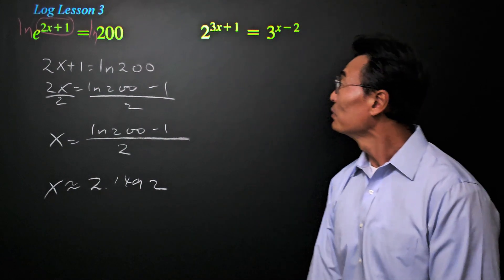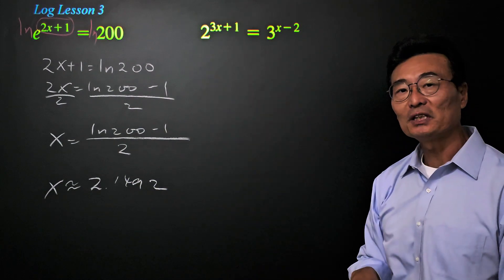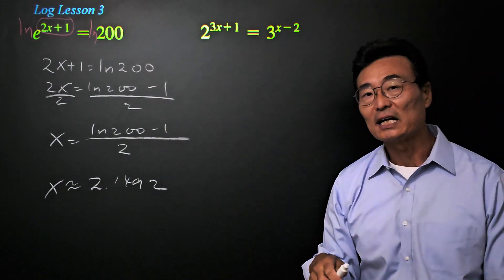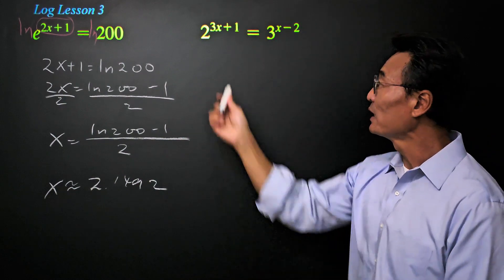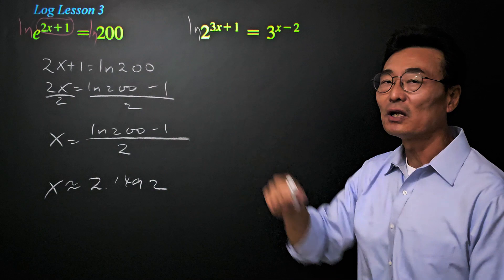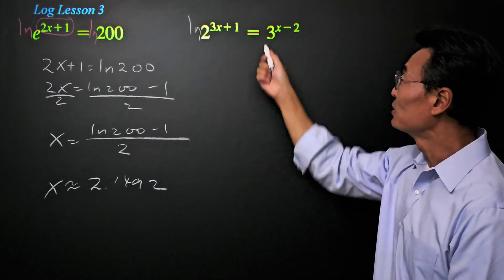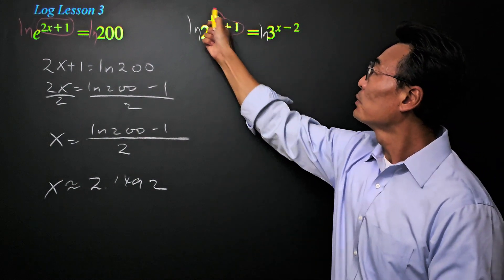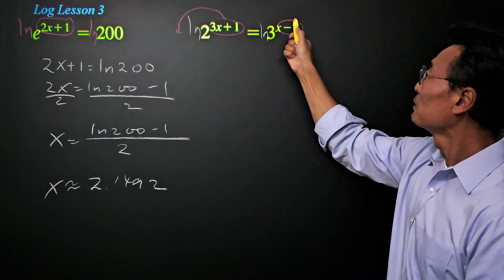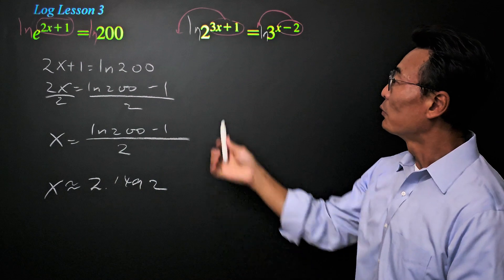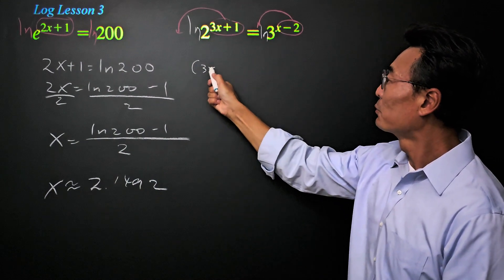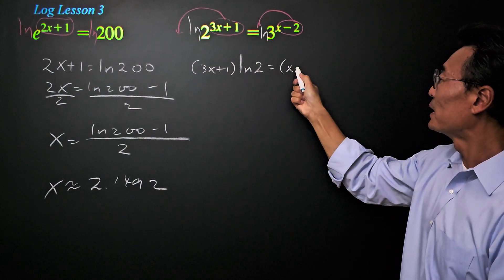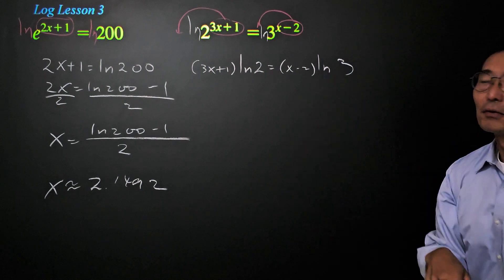Here's another example. This time, we have the exponent as a variable on the left and the right side. We could either take the log or the natural log, but I prefer to take the natural log — the reason is it's two letters versus three letters for the log. So if I take the natural log of the left and right side, we're able to take that exponent and put it out in front, giving us 3x plus 1 times natural log of 2 equals x minus 2 times natural log of 3.